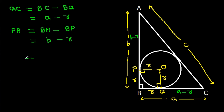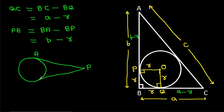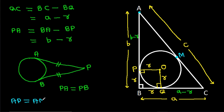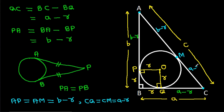Now, in any circle, from any external point, if we draw two tangents to the circle — suppose the tangent points are A and B — then PA equals PB. So from point A, AP equals AM, which is b minus R; AM equals b minus R. And from point C, CQ equals CM, which is a minus R; CM equals a minus R.